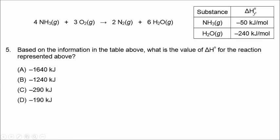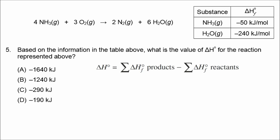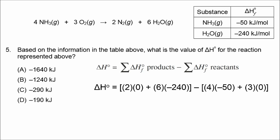Number 5 refers to the equation that allows you to calculate delta H for a reaction from enthalpy of formation: the sum of enthalpy of formation for products minus the sum for reactants. You don't see the enthalpy of formation for oxygen gas or nitrogen gas because those are elements in their natural state, so their enthalpy of formation is defined as 0.